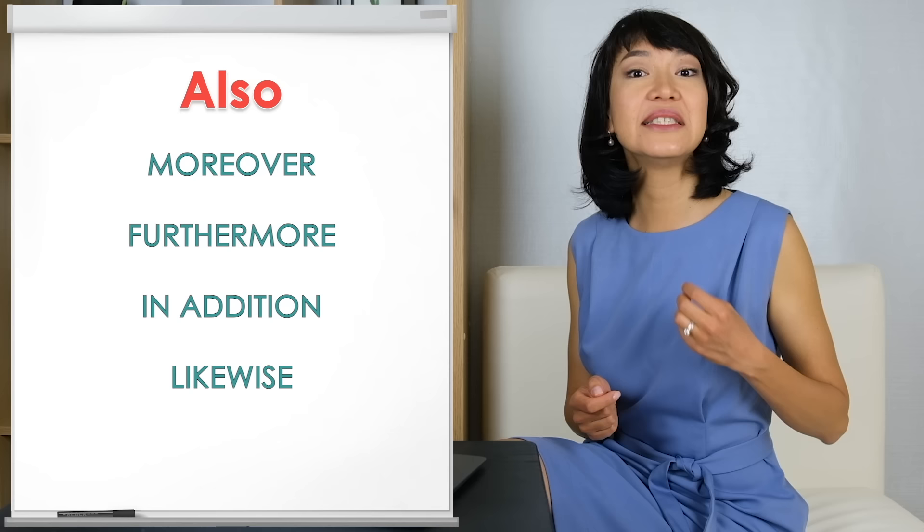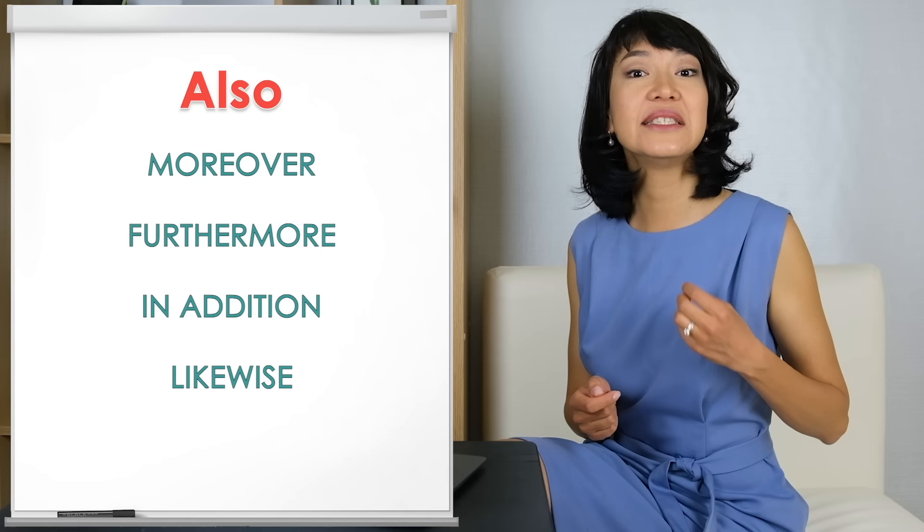Now, what if we want to say something a little more complicated? We can add or join an additional idea or point to our argument. This is very important in Task 2 essays in particular, because we should try to present several points of view in favour of or against the topic in question. The simple way to do this is using ALSO. But let's add some alternatives: moreover, furthermore, in addition, likewise, and similarly.